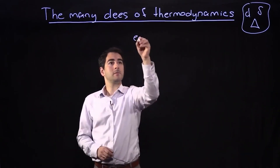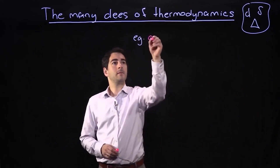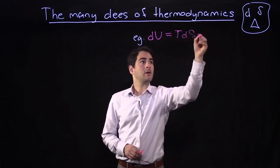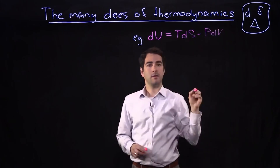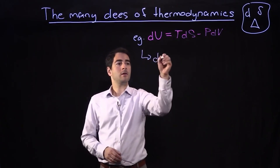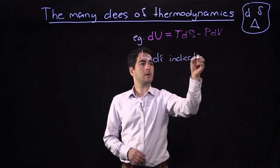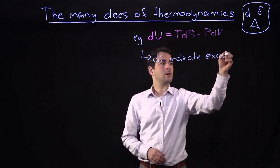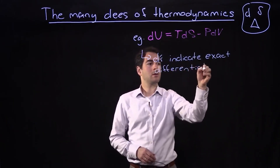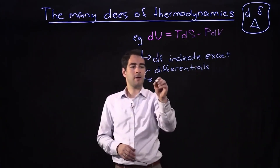For example, when we write the combined statement of the first and second law, we have dU equals T dS minus P dV. In this case, the d's indicate exact differentials, which are equal to infinitesimal changes in state variables.